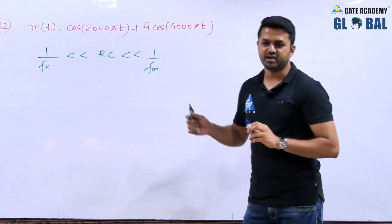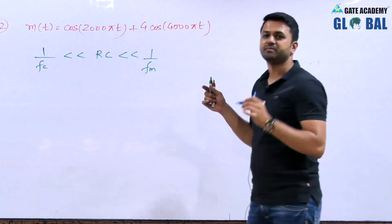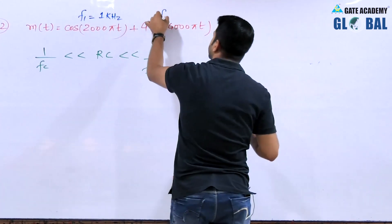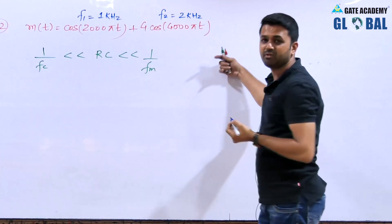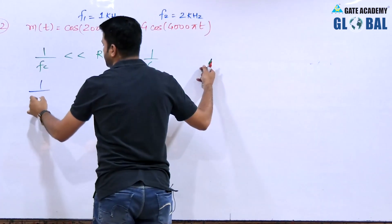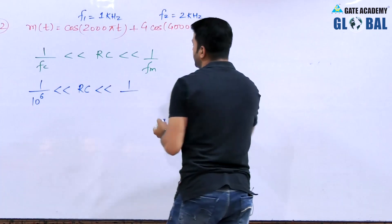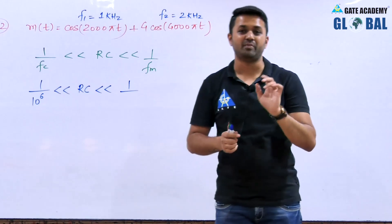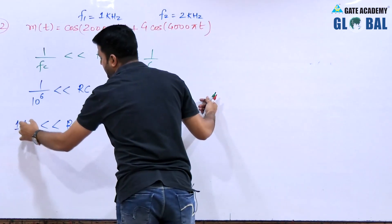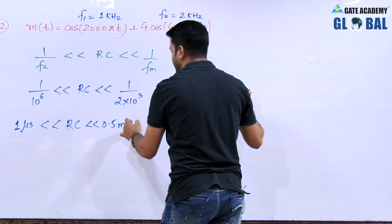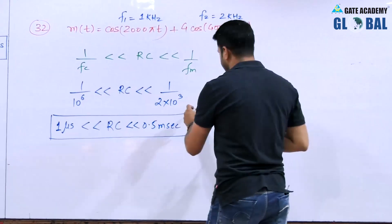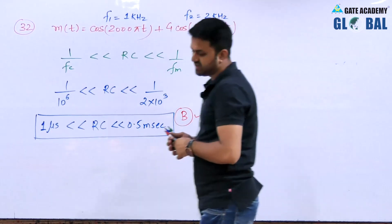In the case of a multi-tone signal, fm is the maximum frequency component present in the modulating signal. The first component has frequency 1 kilohertz and the second term has frequency 2 kilohertz. So fm = max(1 kHz, 2 kHz) = 2 kHz. Therefore 1/10^6 << RC << 1/(2×10^3), giving RC: 1 microsecond << RC << 0.5 millisecond. According to the options, the correct answer is option B.